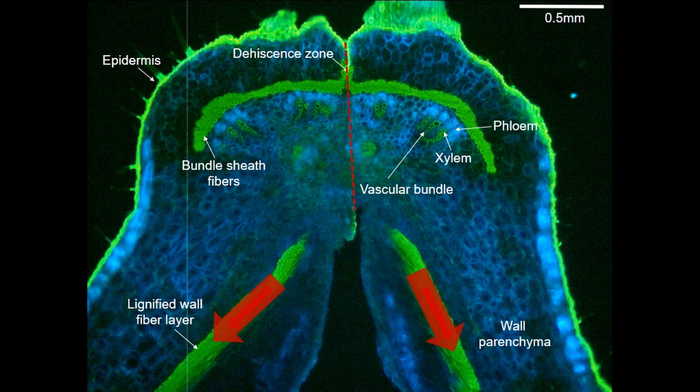During domestication, a reduction in pod shattering was often achieved by selecting for mutants with reduced pod wall tension. Other mutations have caused an increase in strengthening of the dehiscence zone, allowing it to withstand tension without breaking.